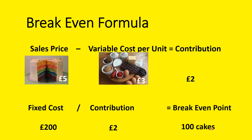If I sell 101 cakes, I will make a profit of two pounds. If I sell 102 cakes, I will make a profit of four pounds. For every cake I sell, I contribute two pounds. First of all, it pays off the fixed costs, and then it pays off the breakeven point.